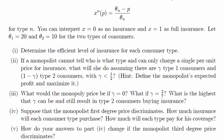So now this is a solution to part 4 of question 4 of the review tutorial. Suppose that the monopolist first-degree price discriminates. How much insurance will each consumer type purchase and how much will each type pay for his coverage? So let's go to the diagrams.